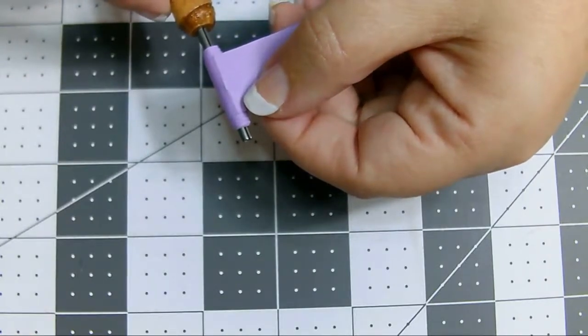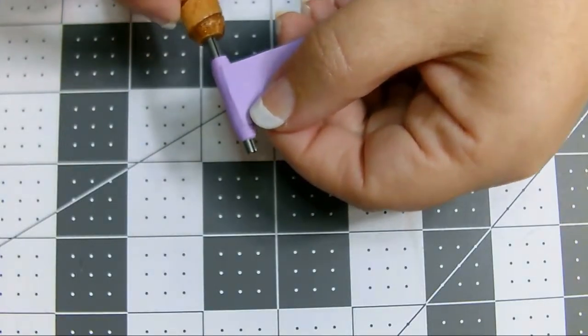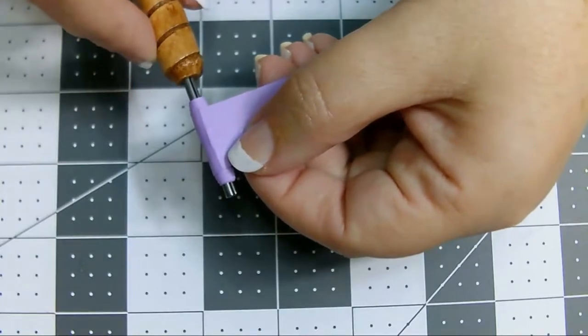We want to make sure it doesn't slip while we're rolling our three prongs. Once we start rolling, we will be putting a little bit of pressure on that joint.